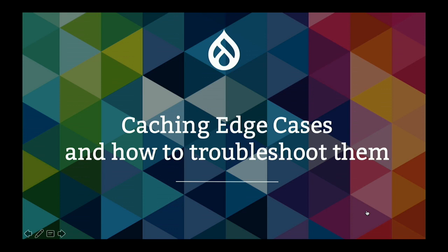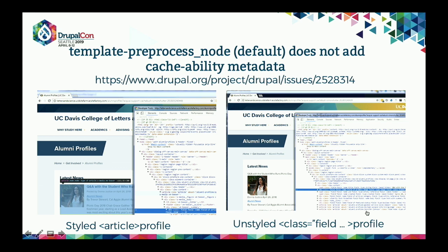Let's get into the interesting problems. We had a client, UC Davis, with a persistent issue on their alumni profile page and news page. This was a dynamic page generated through views where some profiles would show up properly — styled with the article tag around them — and some would show up completely unstyled, just text with field tagging around it. They couldn't figure out why, and neither could we for a long time.